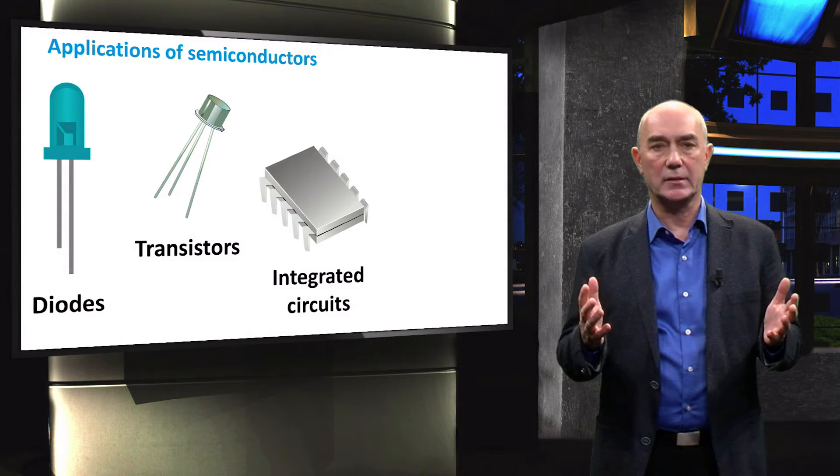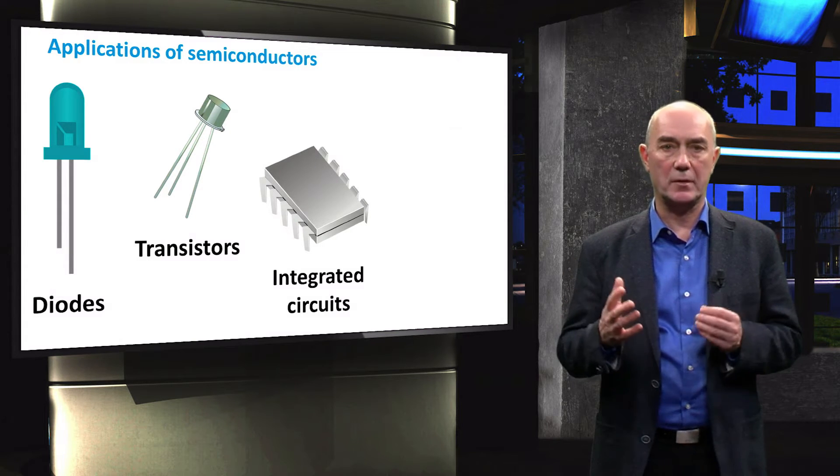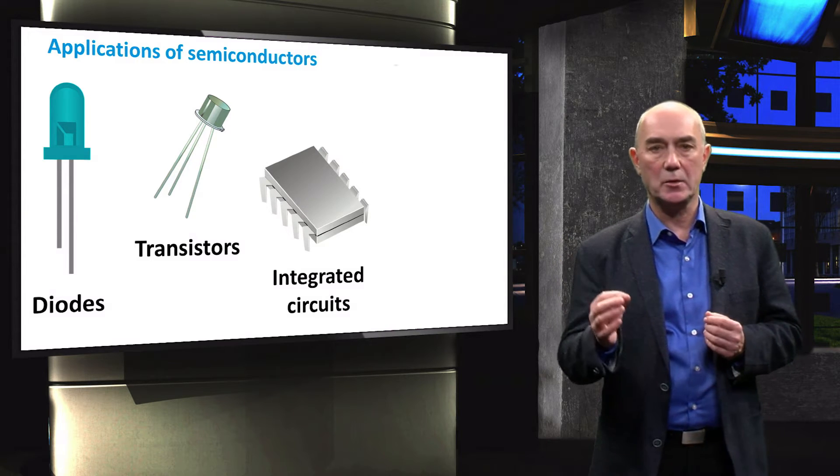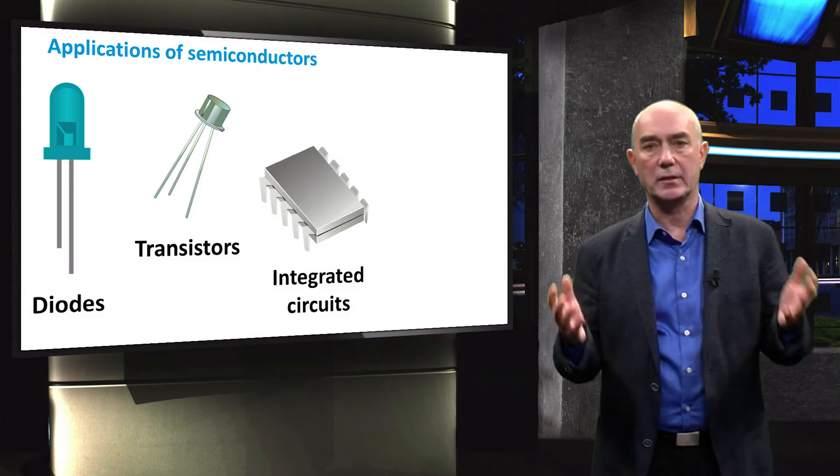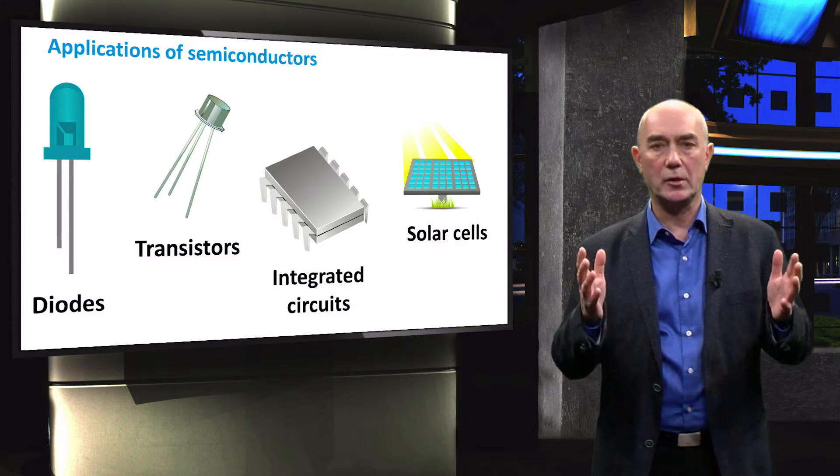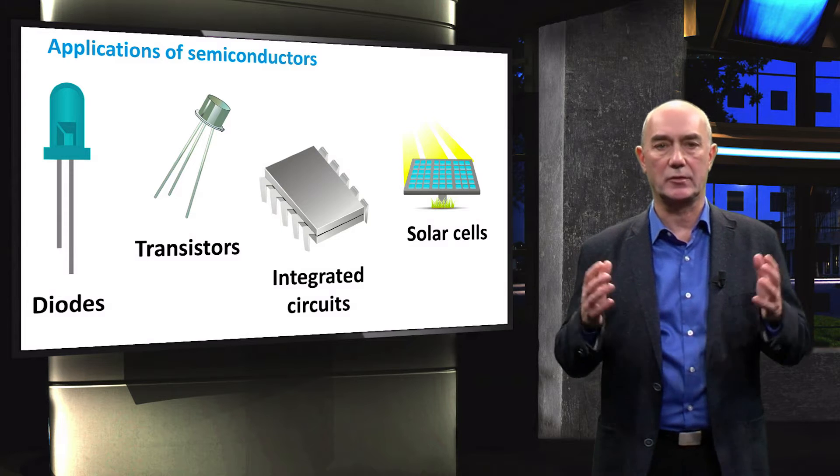Semiconductors are materials that are widely used for several applications. We can find them in electronic devices, such as diodes, transistors or integrated circuits. But for us, they play a crucial role as active materials in solar cells.